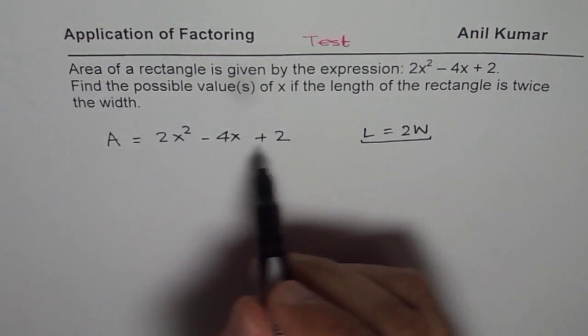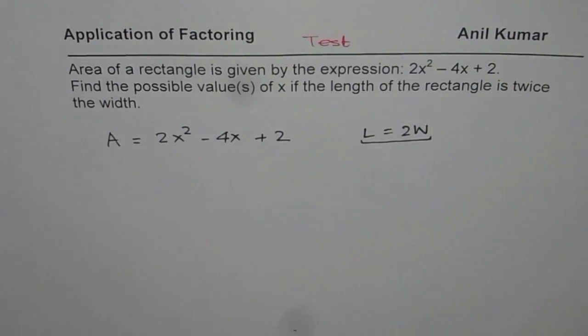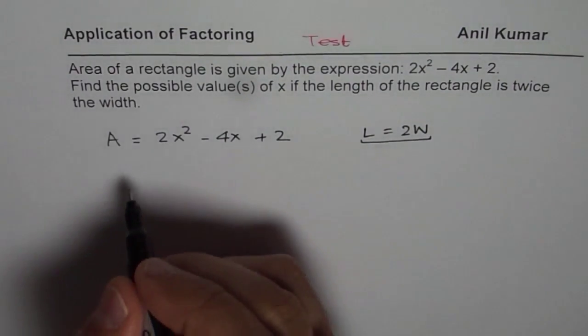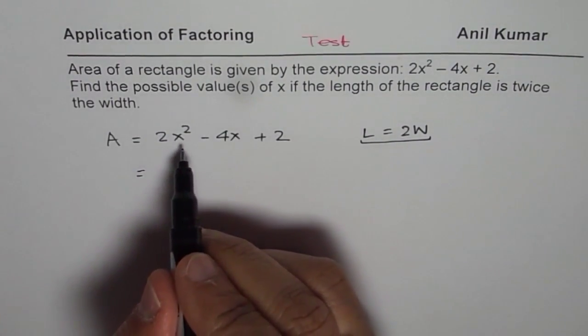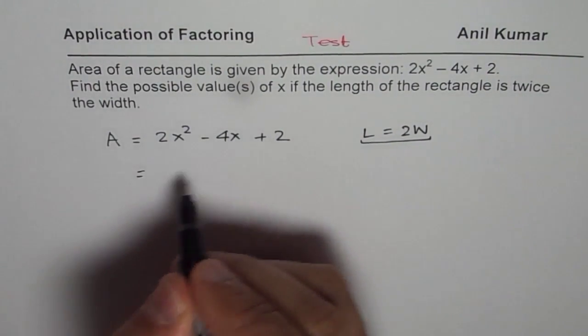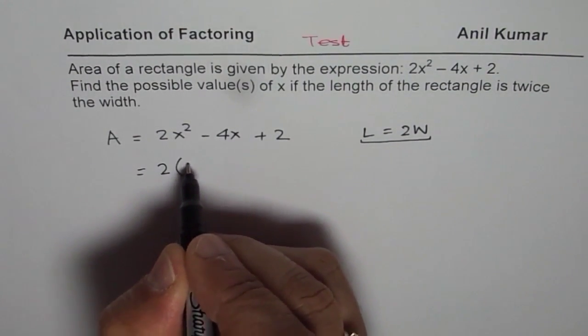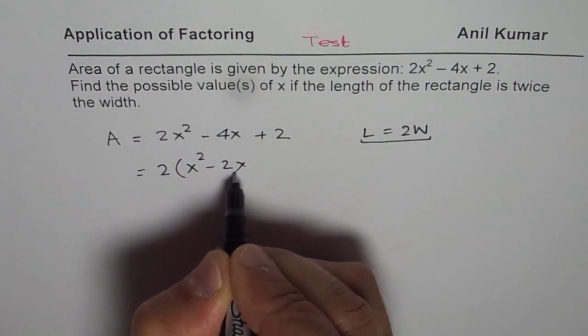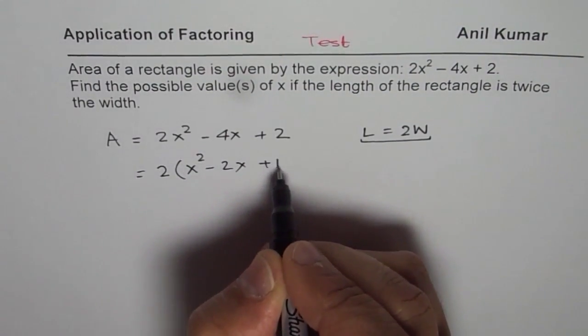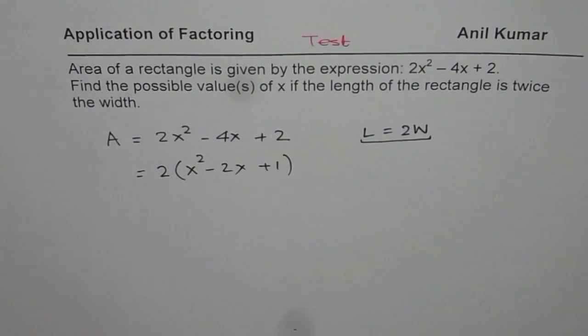Now how do we find x? One way is let us factor. Once we factor, we know what to multiply by what. So 2 is a common factor here. So 2 times x²-2x+1. So that is how you can actually factor it.